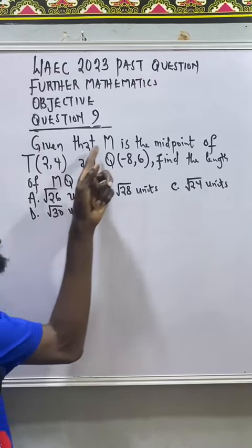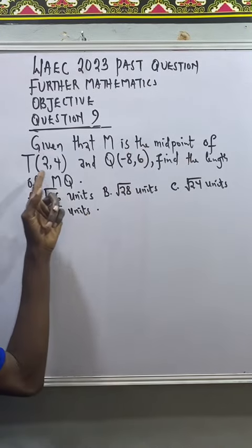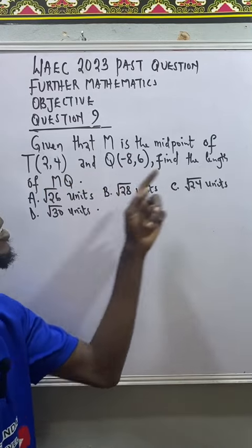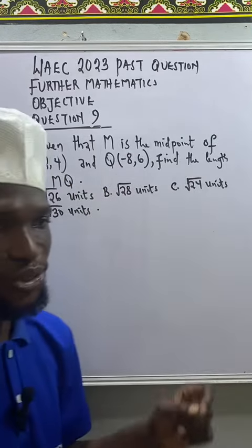I have Further Maths Question 9. Given that M is the midpoint of T(2,4) and Q(-8,6), find the length of MQ.